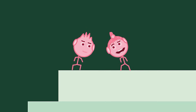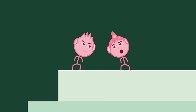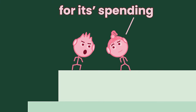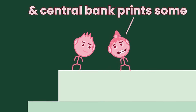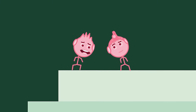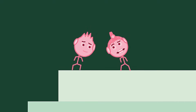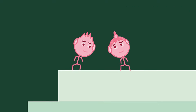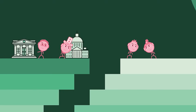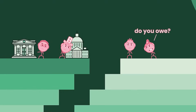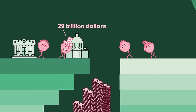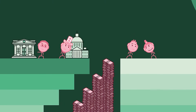Let me get this straight — so governments need money for their spending problem, and the central bank prints it up? How much does the government owe? About $29 trillion. Wow, you do have a spending problem.